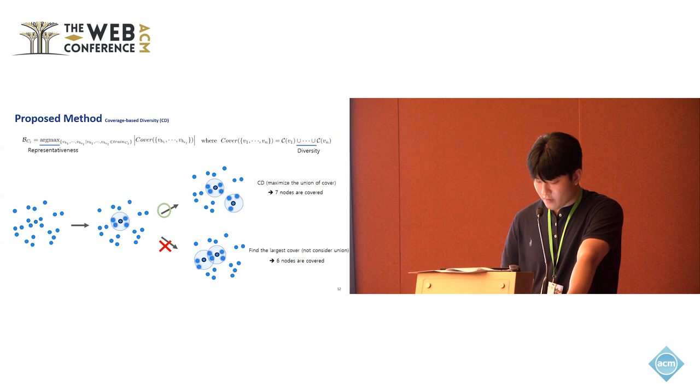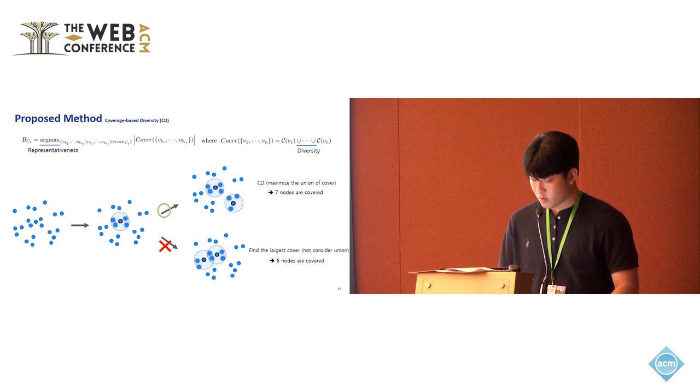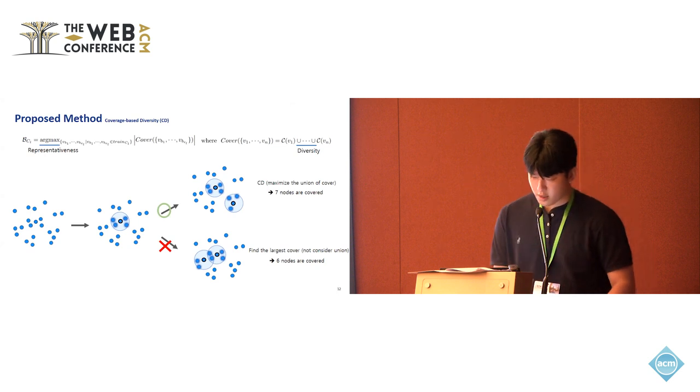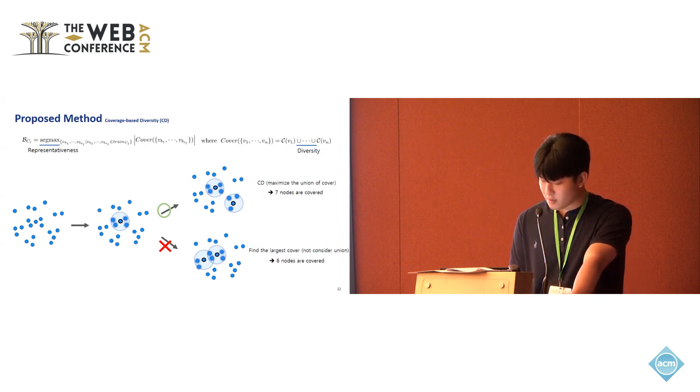More specifically, maximizing the union of covers enables the selection of a more diverse buffer. The following case illustrates simply selecting nodes with largest cover. However, overlapping nodes result in the buffer set covering only six nodes. On the other hand, maximizing the union of covers allows inclusion of totally seven nodes. Therefore, in the above equation, the union part signifies diversity, while the argmax part signifies the representativeness of nodes.